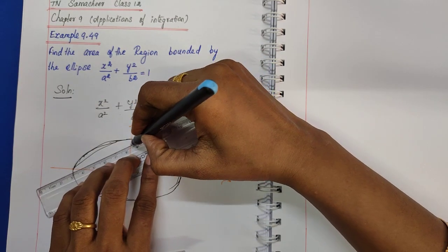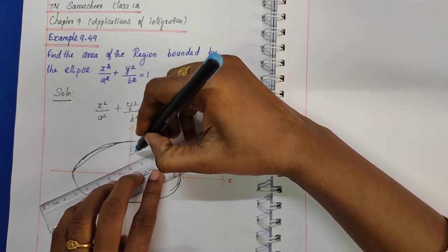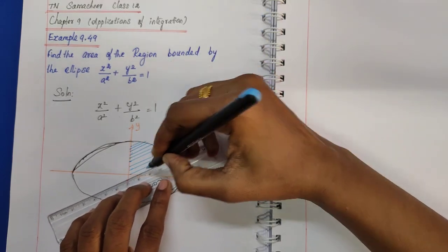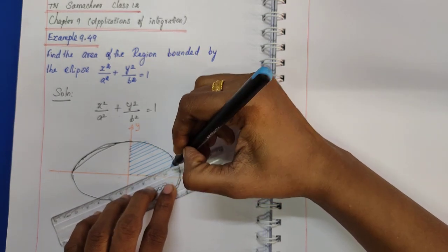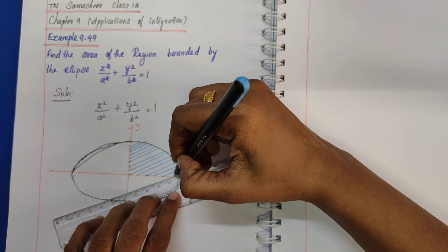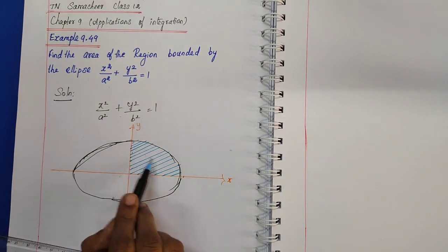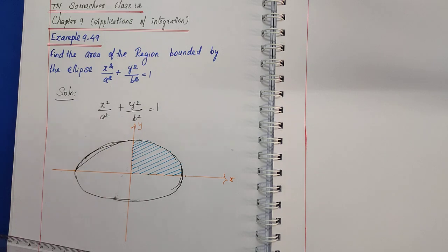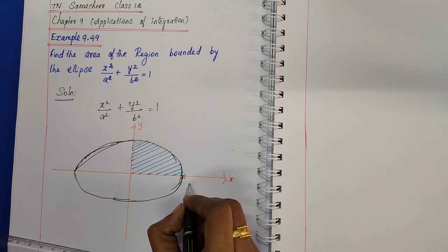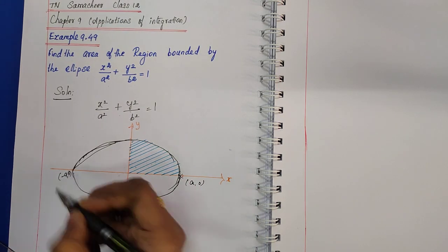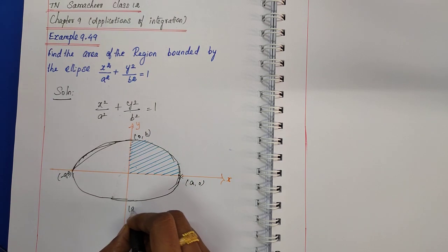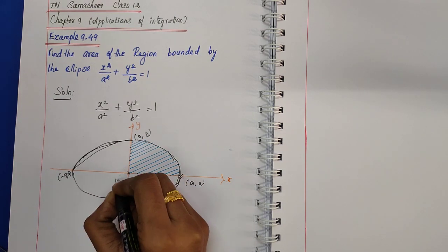We will shade the first quadrant region. Since the ellipse is symmetric, we can calculate the area of the first quadrant and multiply by 4 to get the required total area. The key points on the ellipse are: (a, 0), (−a, 0), (0, b), (0, −b), and the centre is (0, 0).